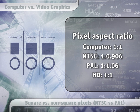For a computer, a pixel is one unit high and one unit wide. For NTSC video, it's one unit high but .906 units wide. PAL also uses a rectangular pixel, but it's a different sized rectangle — PAL is one unit high by 1.06 units wide.